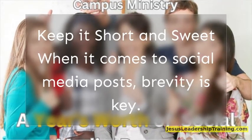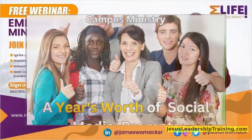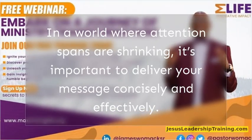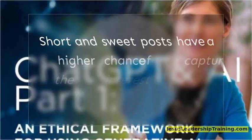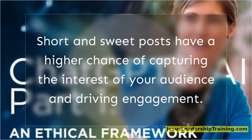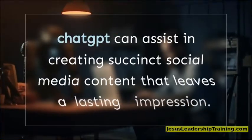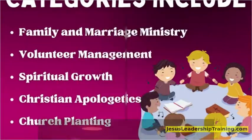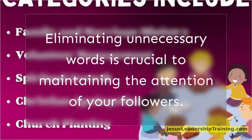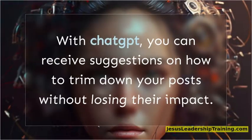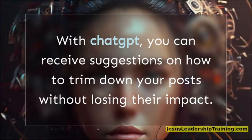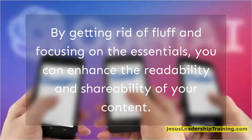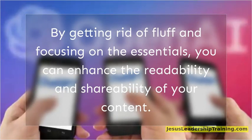Keep it short and sweet. When it comes to social media posts, brevity is key. In a world where attention spans are shrinking, it's important to deliver your message concisely and effectively. Short and sweet posts have a higher chance of capturing the interest of your audience and driving engagement. ChatGPT can assist in creating succinct social media content that leaves a lasting impression. Eliminating unnecessary words is crucial to maintaining the attention of your followers. With ChatGPT, you can receive suggestions on how to trim down your posts without losing their impact, enhancing the readability and shareability of your content.